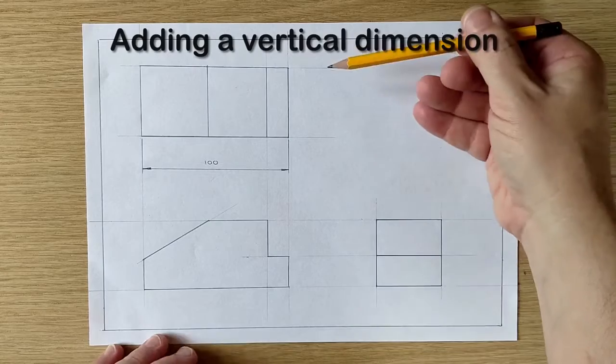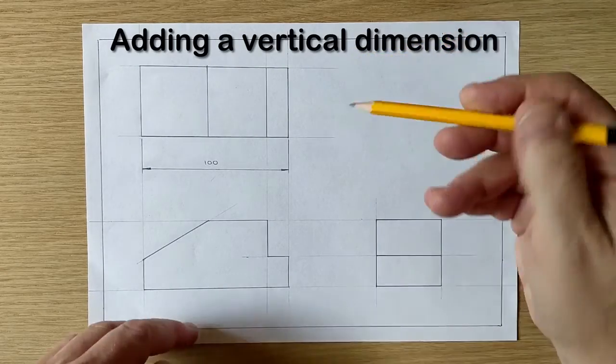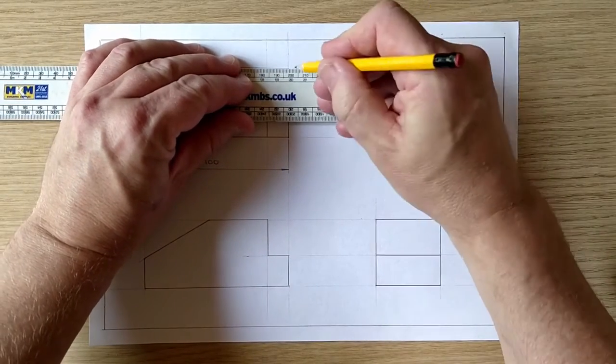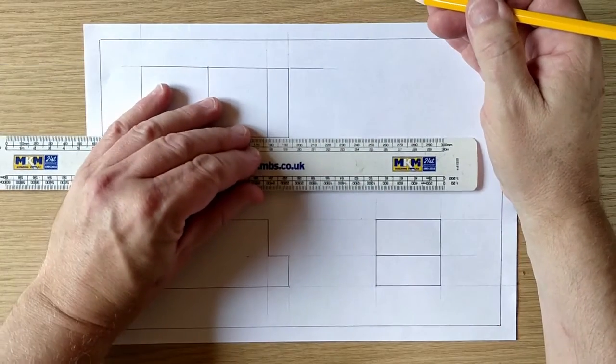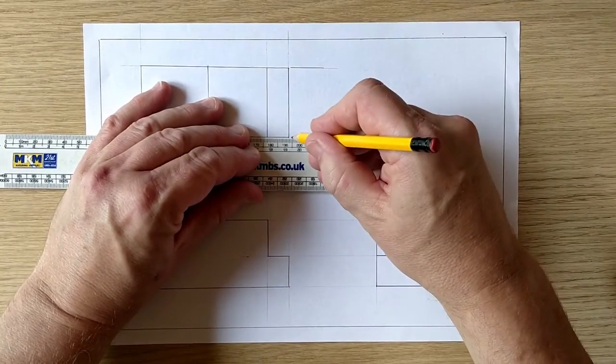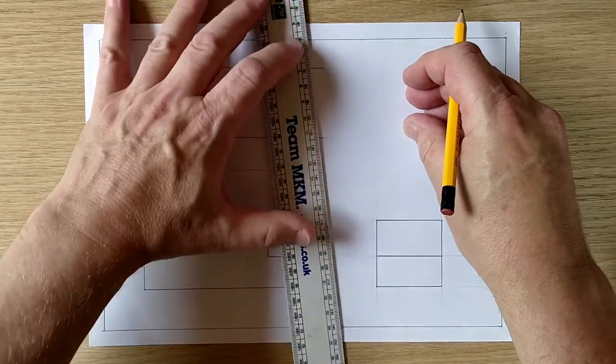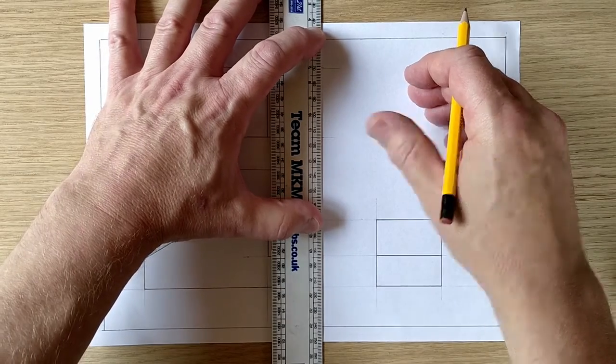What about a vertical one then, how about the width of the block looking down on it? Well I'm going to do exactly the same. I'm going to add in two extension lines not touching. A nice sharp pencil, make them about the same length. Then I'm going to put a vertical line that does touch the extension lines just in from the end.